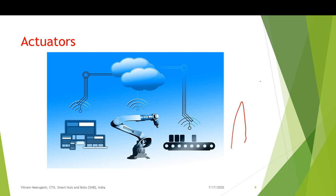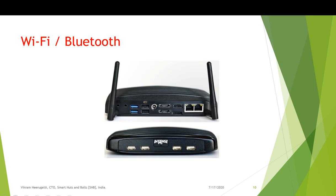Next are the actuators. When you want to trigger output based on sensor values — if light intensity is low the light should turn on, if temperature changes the AC should adjust — the microcontroller processes sensor values and triggers the actuators. Actuators act as output devices: switching on a light, fan, motor, or other equipment. These three — sensors, microcontroller or microprocessor, and actuators — are the basic requirements to develop any IoT product.